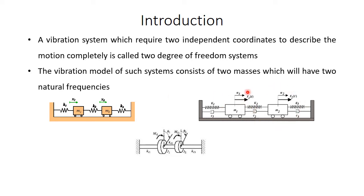Since there is no damper, it is an undamped free vibration 2 degree of freedom system. The second one actually consists of dampers, so this is a damped vibration system. There is also an external force F1(T) acting on mass M1 and F2(T) acting on mass M2, so this is a forced vibration system as well.